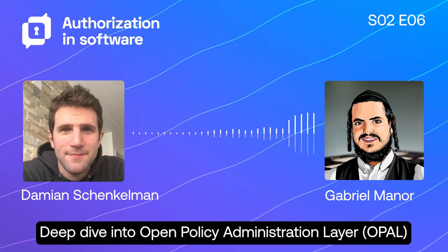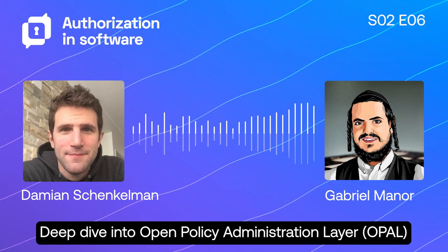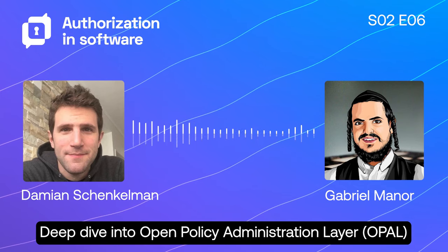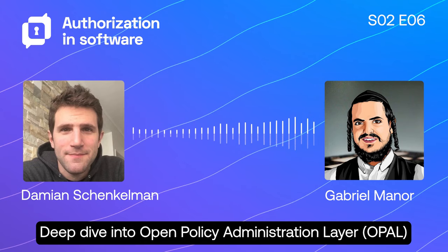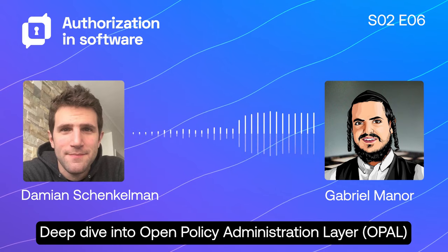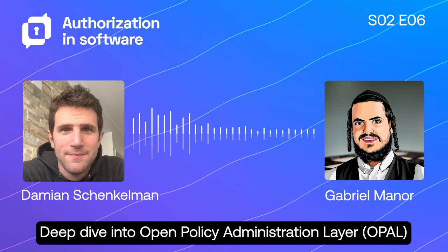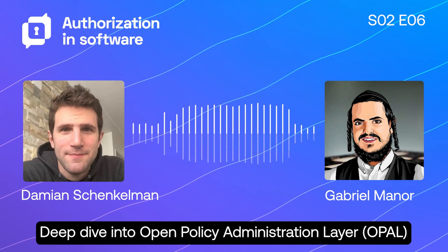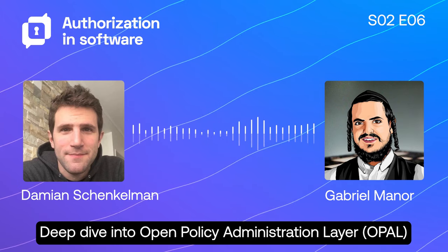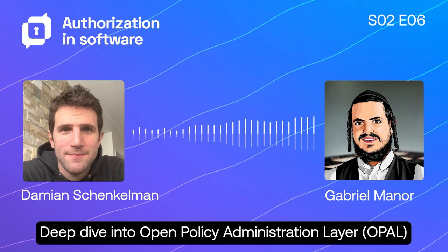As the application and users get more sophisticated, you need more granular decisions, and coarse-grained role-based access control might not be enough. As you need to go more granular, policies become a viable option for that. What's the typical evolution path an application follows? Not everyone starts using policies — so when do they decide to start using them, and what challenges do teams face?